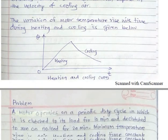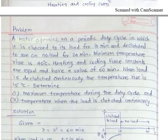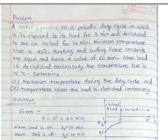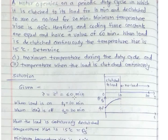Let us now see a numerical example from the textbook. A motor operates on a periodic duty cycle in which it is clutched to its load for 10 minutes and declutched to run on no load for 20 minutes. Minimum temperature rise is 40 degrees Celsius. Heating and cooling time constants are equal and have a value of 60 minutes. When the load is declutched continuously, the temperature rise is 15 degrees Celsius. We have to determine the maximum temperature during the duty cycle and the temperature when the load is clutched continuously.